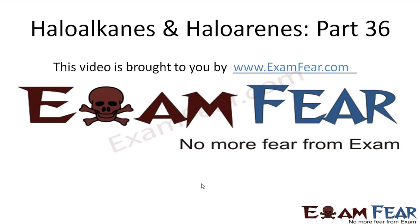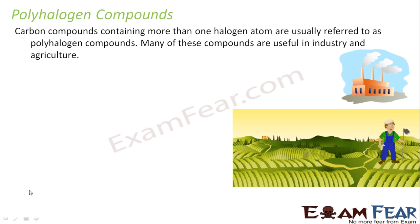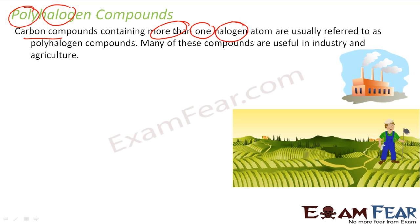This video on Haloalkanes and Haloalkenes part 36 is brought to you by examfear.com. Now we learn polyhalogen compounds. As the name suggests, polyhalogen means more than one halogen. So compounds which have more than one halogen are called polyhalogen compounds. They are very useful in industry and agriculture, and that's why we are studying this.